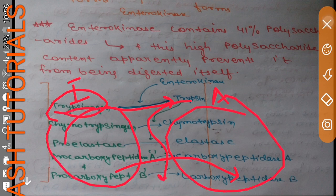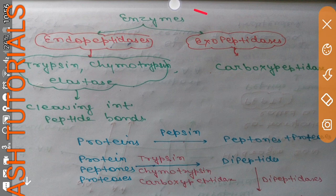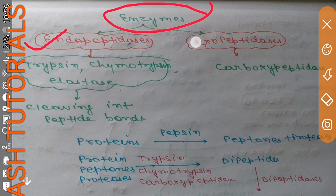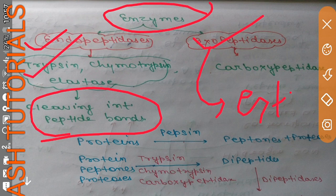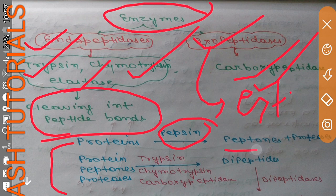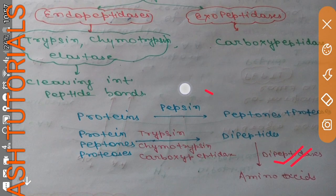The enzymes involved in protein digestion belong to two classes: endopeptidases and exopeptidases. Endopeptidases cleave interior peptide bonds — generally trypsin, chymotrypsin, and elastase — whereas exopeptidases cleave exterior peptide bonds, such as carboxypeptidase. In the final sequence: pepsin converts proteins into peptones and proteoses; trypsin, chymotrypsin, and carboxypeptidase convert those into dipeptides; and dipeptidase finally converts dipeptides into amino acids.